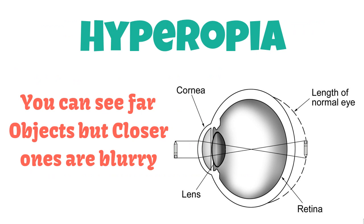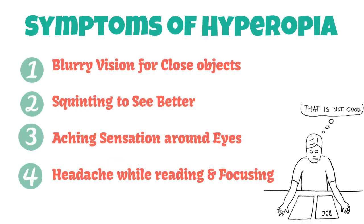In hyperopia, you can see far objects clearly but closer ones are blurry. The symptoms of hyperopia include blurry vision for close objects, squinting to see better, aching sensation around the eyes, and headaches while reading and focusing.